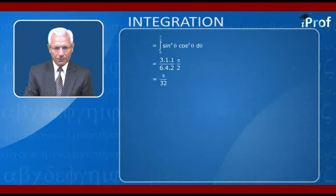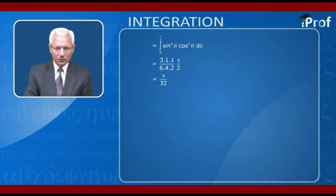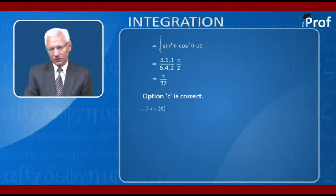Since 4 and 2 are both even, we use the even case: (3!!·1!!) / (6!!) · π/2 = (3·1)/(6·4·2) · π/2. The 3 and 6 cancel appropriately, giving π/32. Hence, question 1 matches option (c).